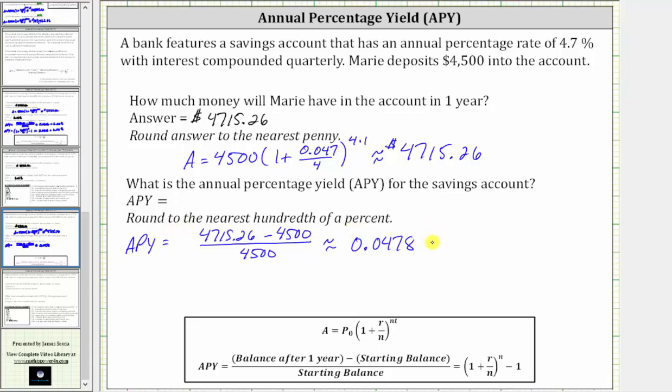Which means the APY is 4.78%. So again, this means after one year, an account that pays 4.78% simple interest would have the same return as the given account that pays 4.7% interest compounded quarterly.